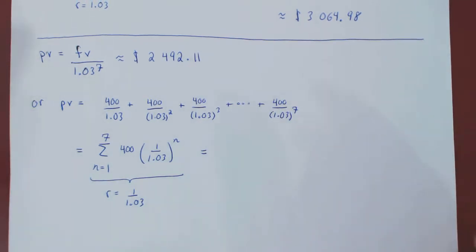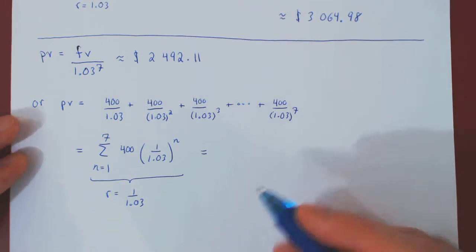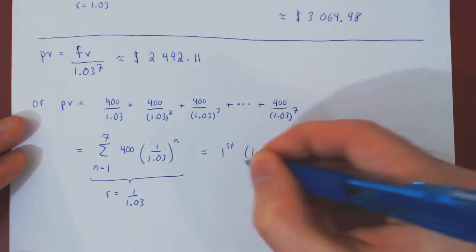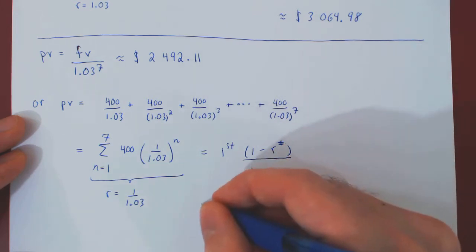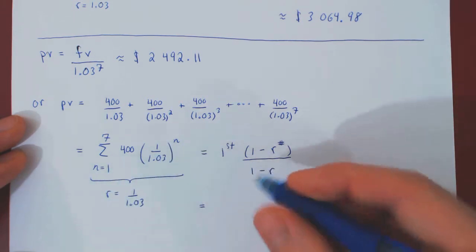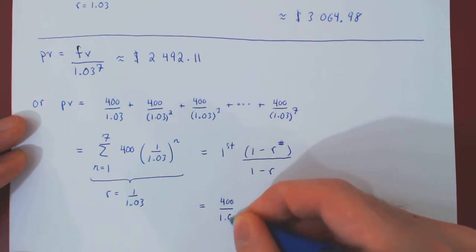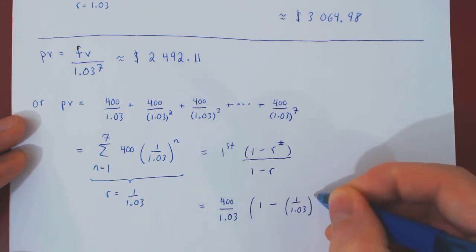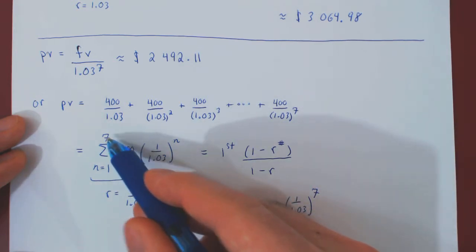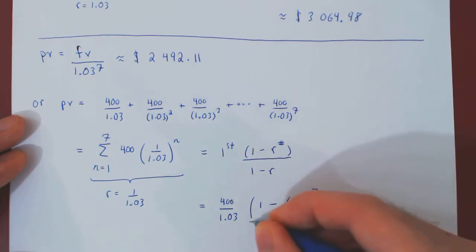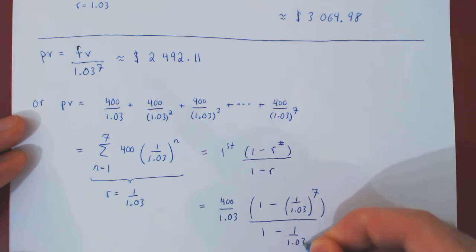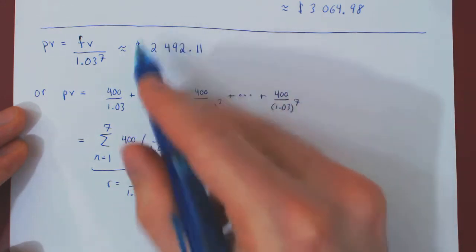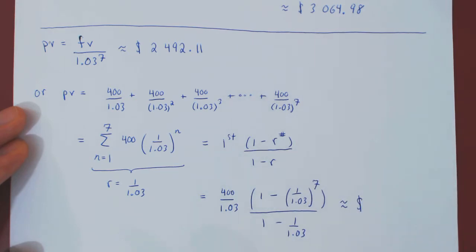And, we can now use the summation formula to evaluate the value of the summation much more efficiently. As we've said before, it is the first term times 1 minus r to the number of terms being summed over 1 minus r. Well, the first term is when n is 1, so this will be 400 over 1.03 times 1 minus r being 1 over 1.03 to the number of terms, which is 7. Again, 7 minus 1 plus 1 is 7 over 1 minus r. And, with a calculator, you will arrive at approximately, and no surprise there, the same value we did using a slightly shorter solution.